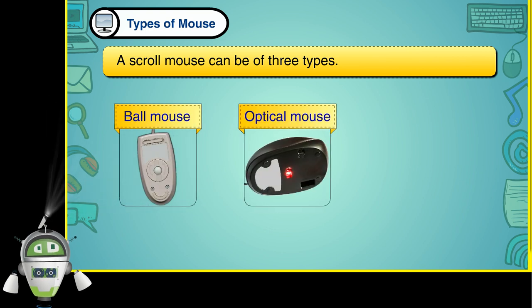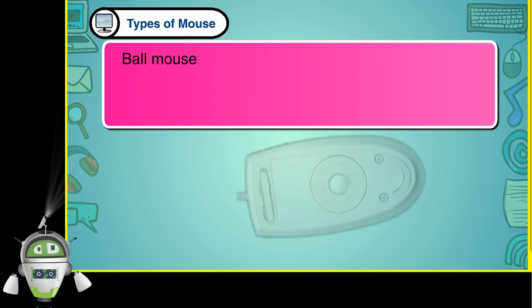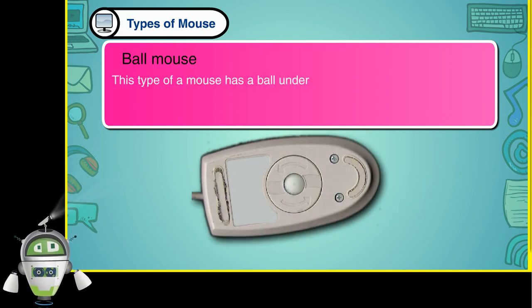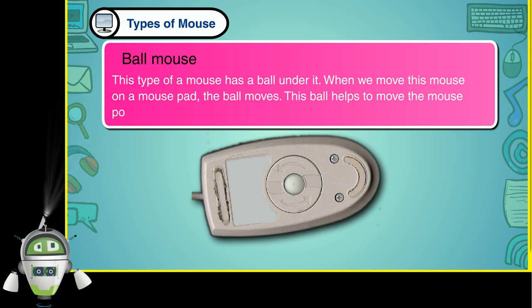Ball mouse, Optical mouse, Wireless mouse. Ball mouse: This type of a mouse has a ball under it. When we move this mouse on a mouse pad, the ball moves. This ball helps to move the mouse pointer on the monitor screen.